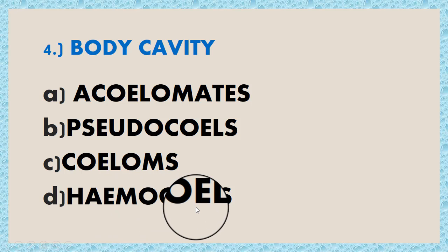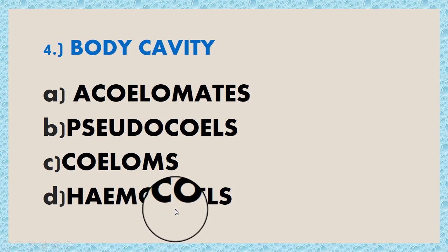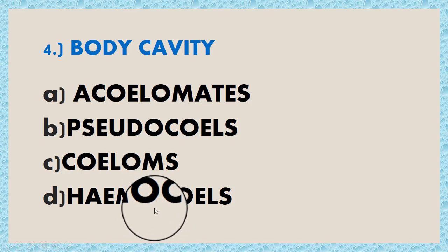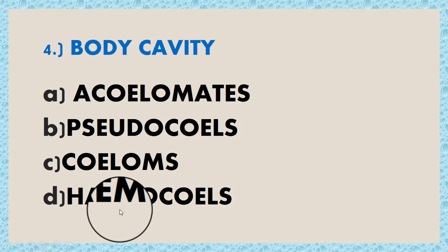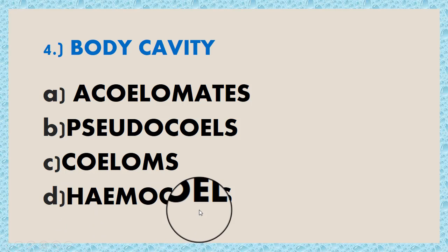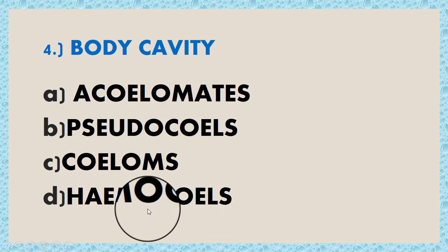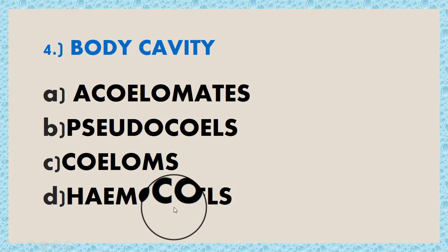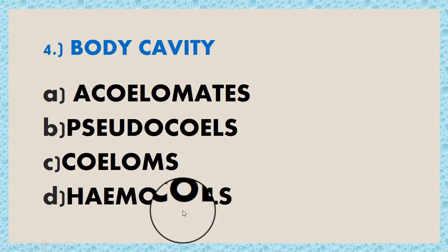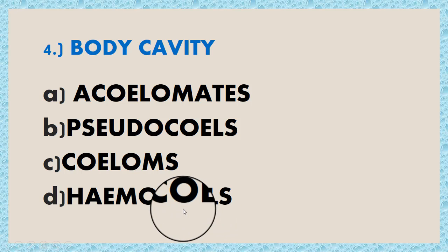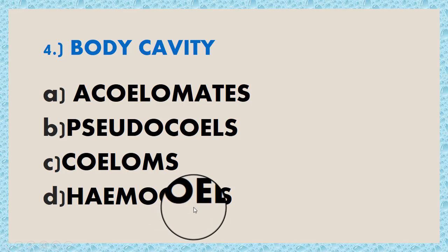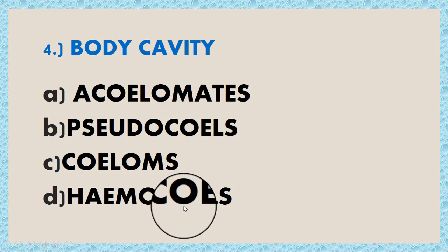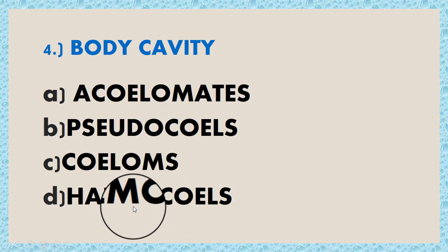The last body cavity type is hemocele. The primary body cavity or blastocoel persists to some extent in many animals, either enclosed within narrow blood vessels or as an open blood-containing space called hemocele. Rapid blood circulation is difficult to achieve but all tissues are continuously bathed in blood. Best examples of hemocele body cavity are molluscs and arthropods.